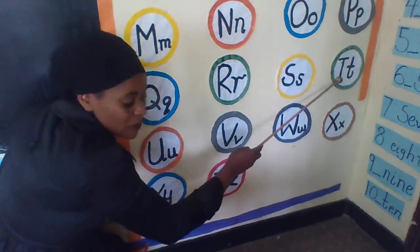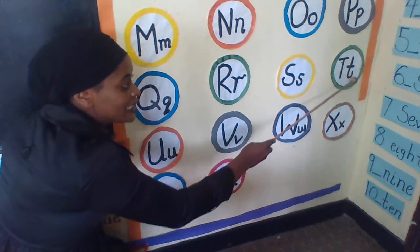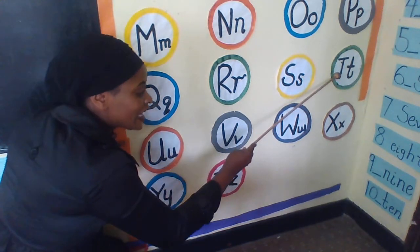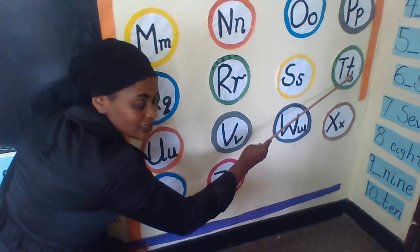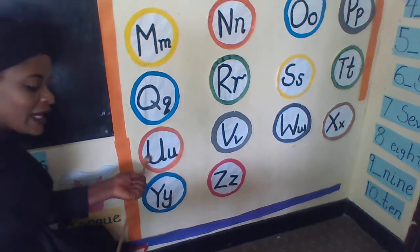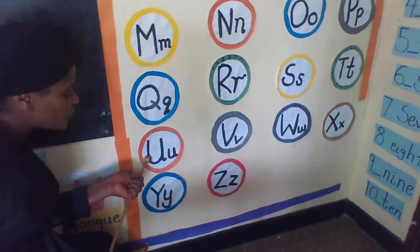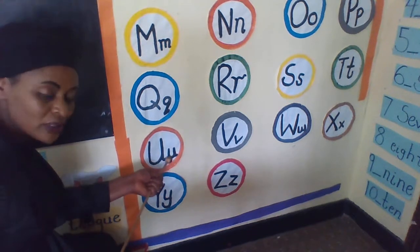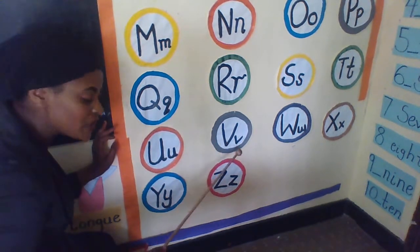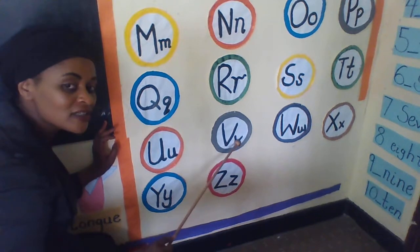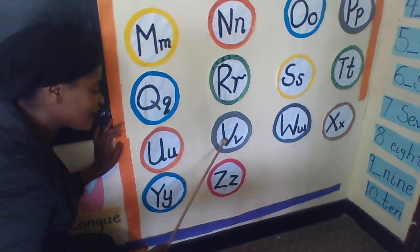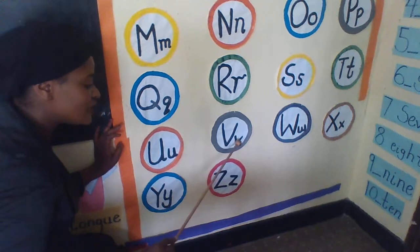Capital letter T, small letter T. Capital letter T, small letter T. Capital letter U, small letter O. Capital letter V, small letter V. Can you read after me? Capital letter V, small letter V.